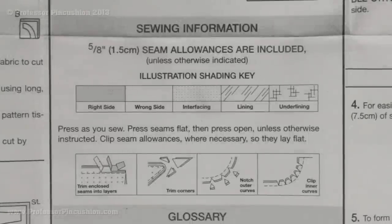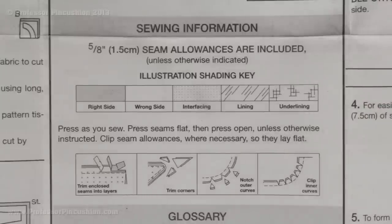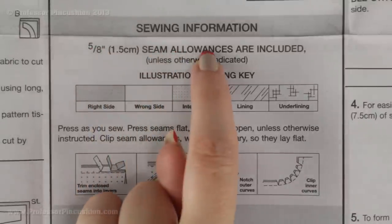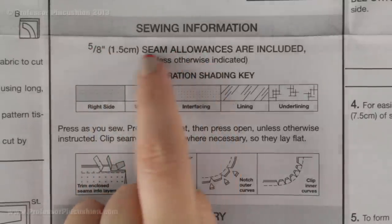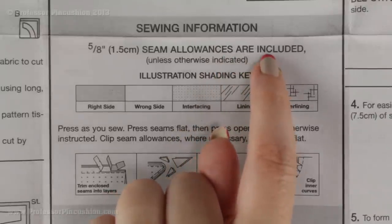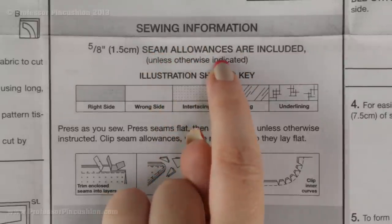I always like to look right above where the pattern directions start because sometimes there is going to be the sewing information box. This is going to give you the basic information you need to know, not only in making your project but also in reading the directions. The very first thing it tells you is what the seam allowances are. They are saying it is 5/8 of an inch seam allowance included, which means they are included in the pattern piece and you don't need to add any seam allowance unless otherwise indicated.